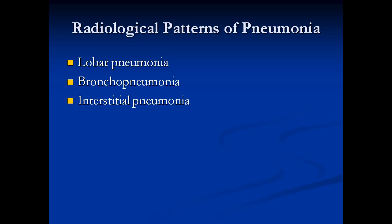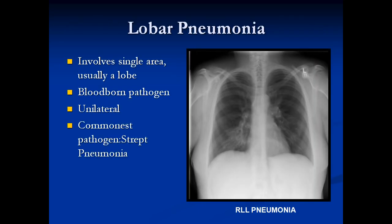Now the last topic I'm going to touch on is the radiographic patterns of pneumonia we see in the lung. Basically, there are three different patterns of infection of the lung: a lobar pneumonia pattern, a bronchopneumonia pattern, and an interstitial pneumonia pattern. All three are distinct and caused by different agents — something you want to remember when looking at a chest x-ray. Lobar pneumonias usually involve one single area of a lobe; the rest of the lung is normal. In this particular case, there's a right lower lobe pneumonia — an area of consolidation with an air bronchogram. Lobar pneumonias are usually caused by a blood-borne pathogen that goes to one area of the lung and spreads from there. It's almost always unilateral, and the commonest pathogen is Strep pneumoniae.